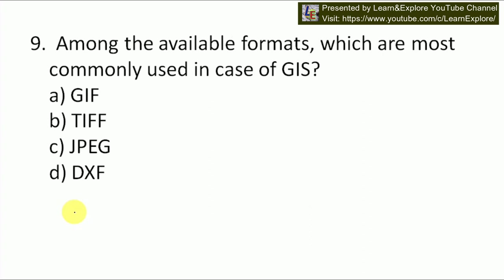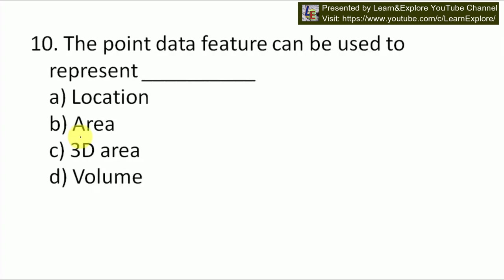Next question: among the available formats, which is most commonly used in GIS? As I mentioned before, GIS uses many output formats like GIF, TIF, and JPG. Among these, TIF is the most commonly used format of GIS. So our answer is B — TIF.